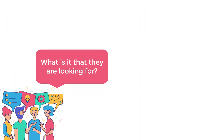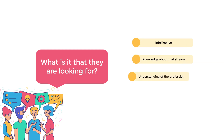The next question is: what is it that they are looking for in you? There can be many parameters, but they can be categorized into a few headings. They are testing a student's first, IQ — that is reasoning ability; second, knowledge about that stream; third, understanding of the profession; and fourth, creativity — the ability to address a situation from different perspectives.